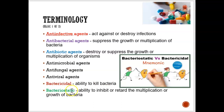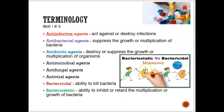Bacteriostatic, on the other hand, is when the growth of the bacteria is suppressed or slows down. Here we see someone wrapping the bacteria with a rope and kind of choking it to slow down the bacteria from growing. So bactericidal is killing the bacteria; bacteriostatic is when it slows down the growth of that bacteria — it doesn't necessarily kill it, but it slows the bacteria from growing and replicating.